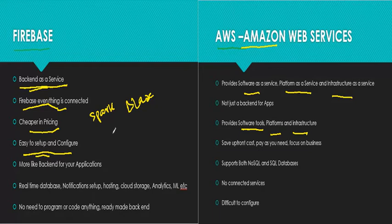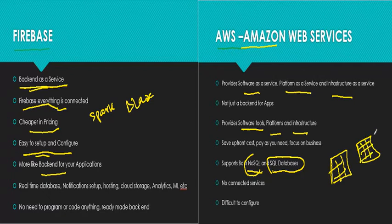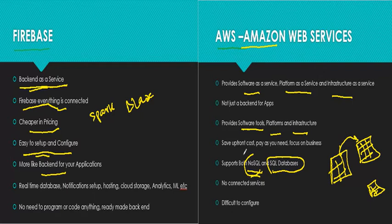In Firebase everything is connected together — it's very easy to configure, connect to your app, and use as a backend. One more notable difference: Amazon supports both NoSQL and SQL databases. SQL databases have tables and rows — for example, employees and their salaries — where tables are connected together in a relational structure. Amazon supports that relational database structure and also supports NoSQL, which is a more flexible structure with column-based, document-based, and key-value pair models.